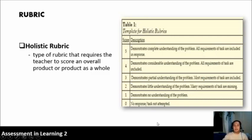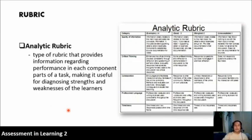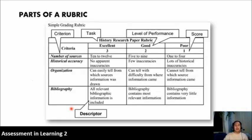Here is an example of a holistic rubric. Last time we also discussed the analytic rubric — another type of rubric which is more specific than the holistic one. This is the type of rubric that provides information regarding the performances of every component. For the analytic rubric, every criteria, category, or domain has a specific descriptor.